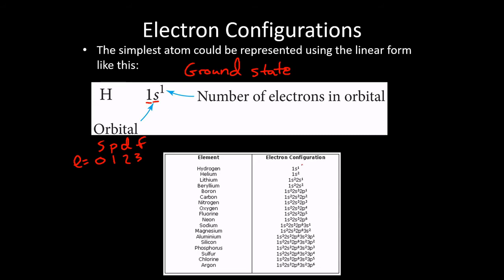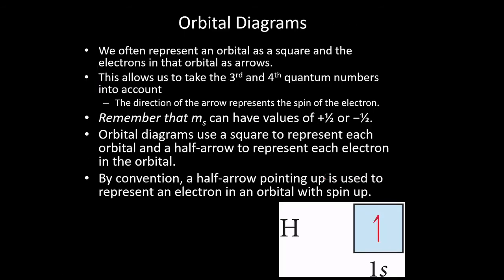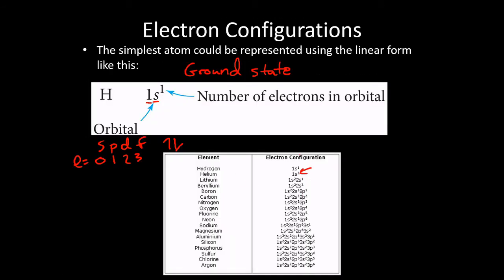Working upward from hydrogen, helium is element number two with two electrons. Each orbital can hold two electrons — this is the Pauli exclusion principle: you can have two electrons in the same orbital as long as one is spin up and the other is spin down. The 1s, having one orbital, can hold two electrons, so both electrons in helium go in the 1s, giving helium the configuration 1s².